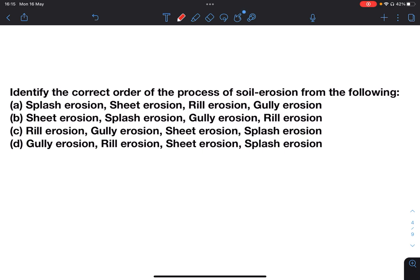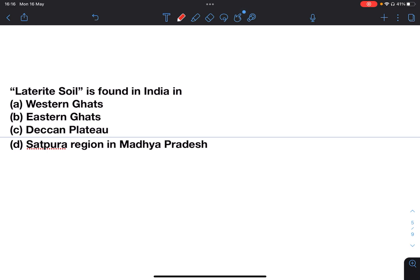Next: Identify the correct order of the process of soil erosion from the following. Options include splash erosion, sheet erosion, rill erosion, and gully erosion in different orders. This question has directly been picked from NCERT. Answer will be A: first there is splash erosion, then sheet, then rill, and lastly gully.